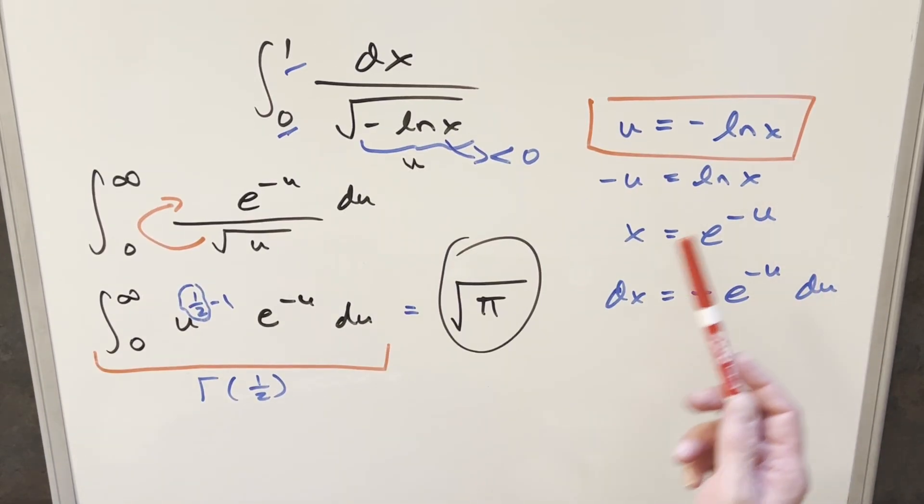Looking back on what we did, you can see why I wanted the minus sign there—it gives us e to the minus u, which sets up the gamma function. Also, we get infinity instead of minus infinity. You could do it the other way with another substitution, but this sets it up nicer. Thanks everyone for watching today. Have a good day.